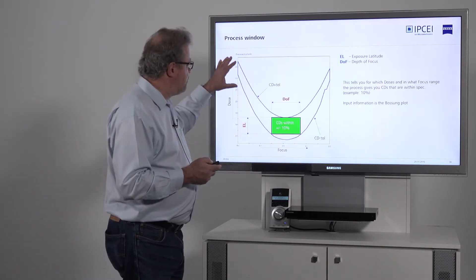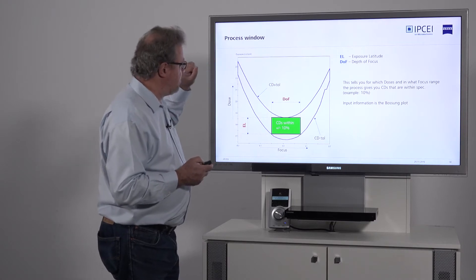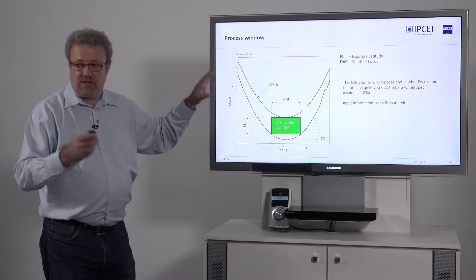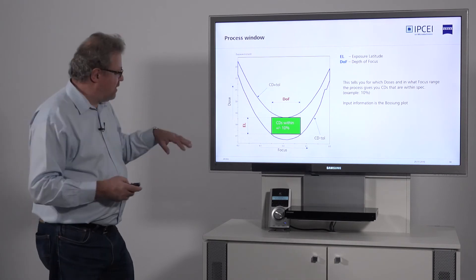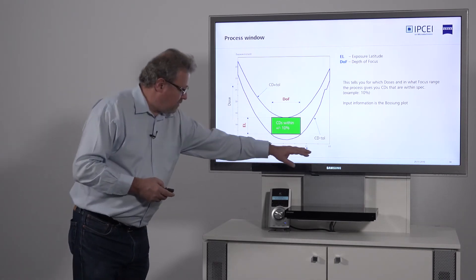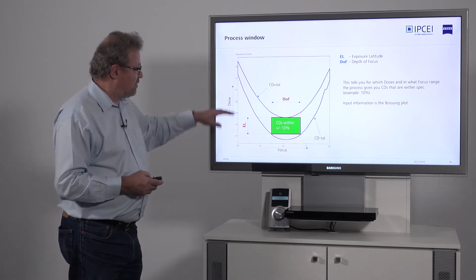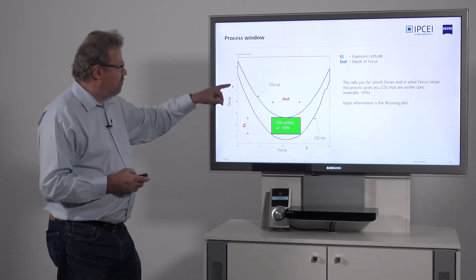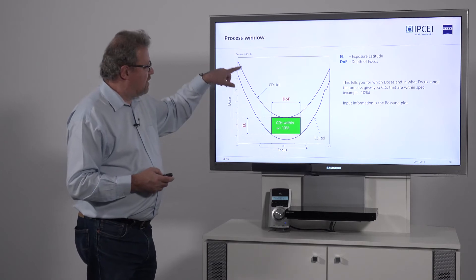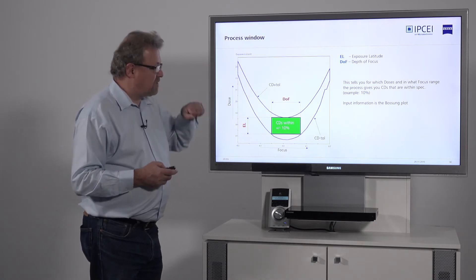You can also plot the process window. Again, it's the same data, just represented in a different chart. Here I have the focus axis on the X-axis, and now instead of the CD, I have the dose axis. What I plot are the curves that give me the CD plus my tolerance and the CD minus my tolerance.